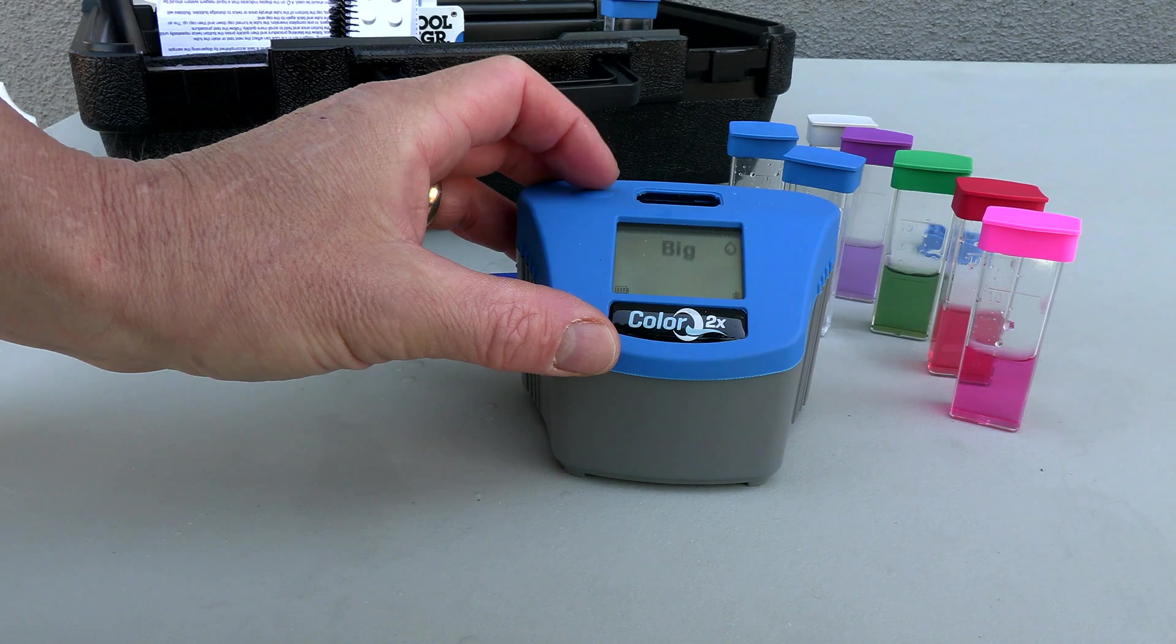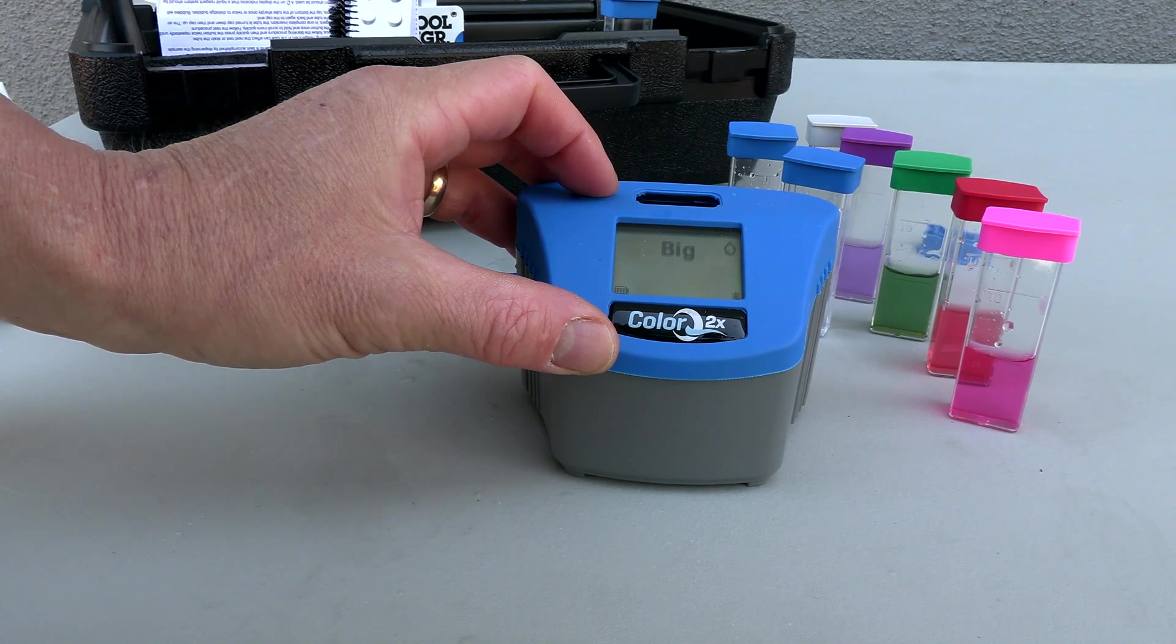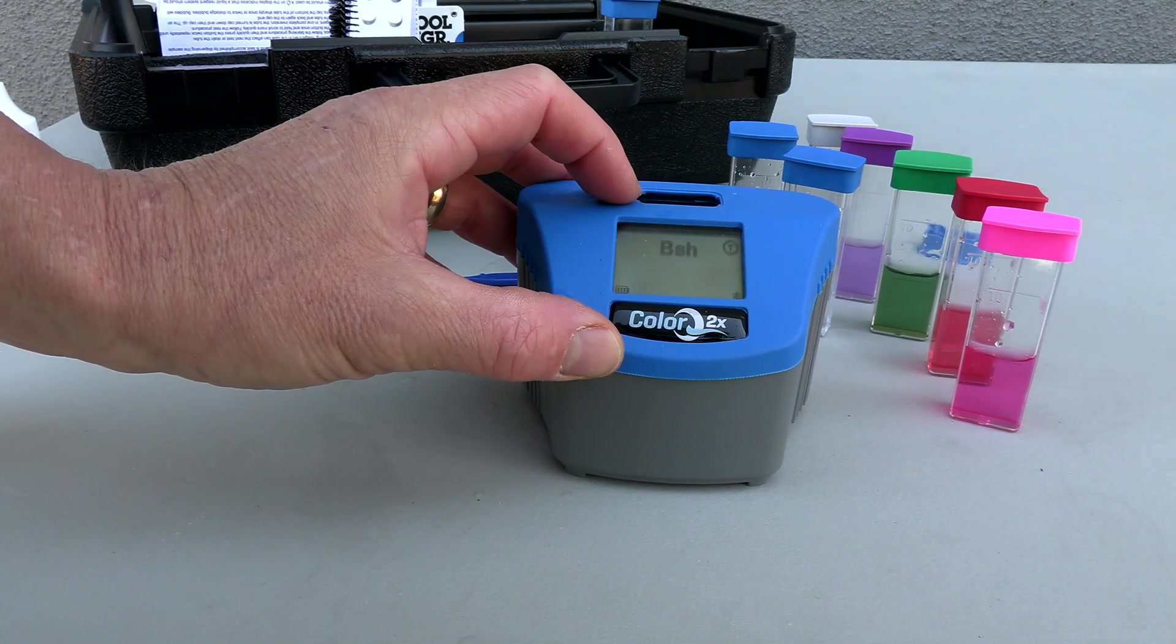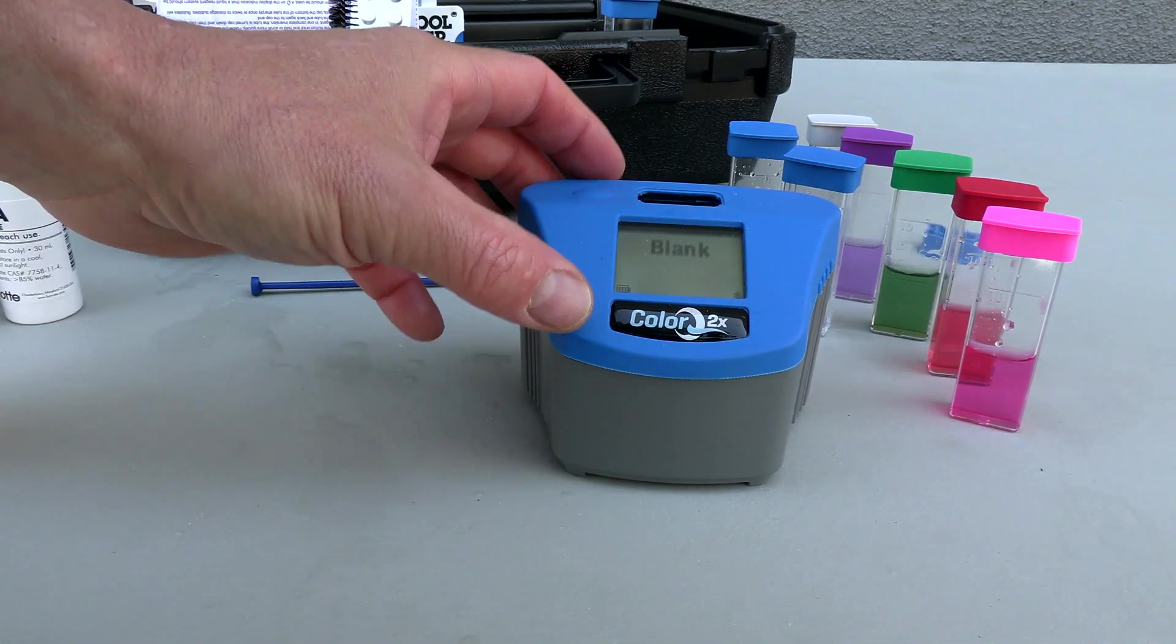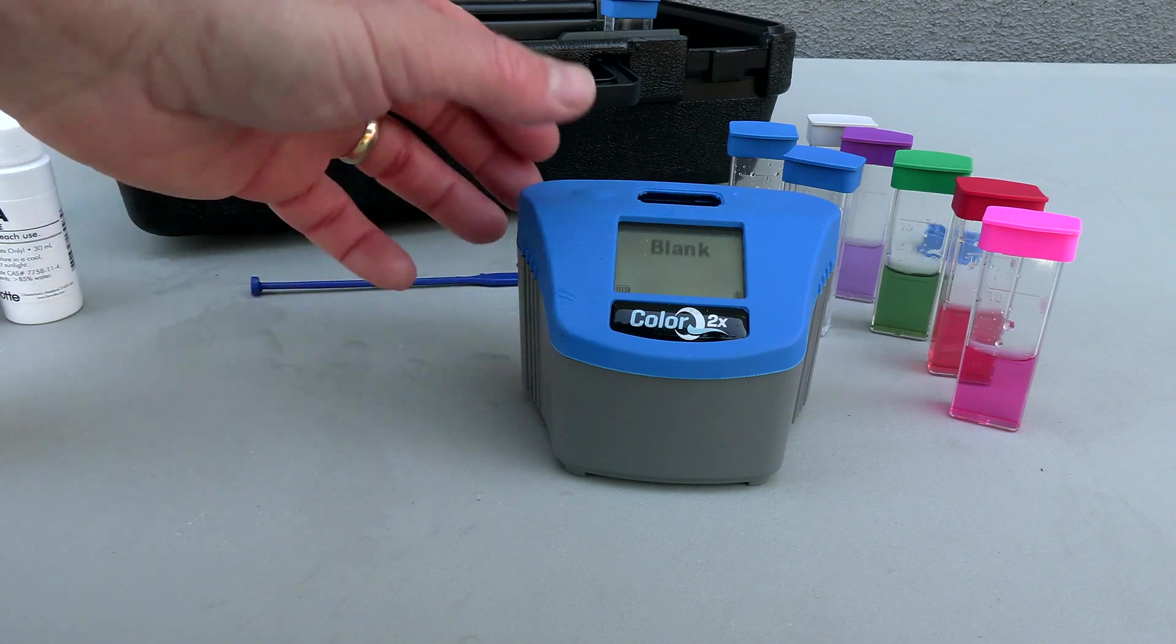Next would be the biguanide and you can skip that by hitting the button really quickly twice. Then the biguanide shock and now you're back to blank. That's how you run through the test factors with the Color Q2X Pro 9.